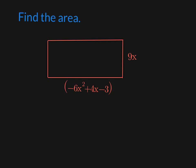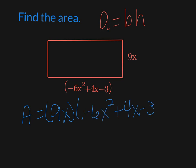All right, last one's find the area. So area equals base times height. So it doesn't matter which one's which. So area is going to equal the base, so let's say that's 9x, times the height, which is negative 6x to the second, plus 4x minus 3.